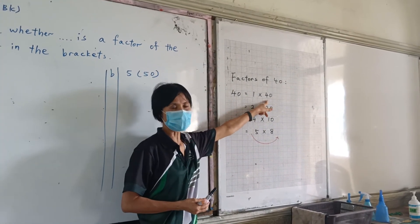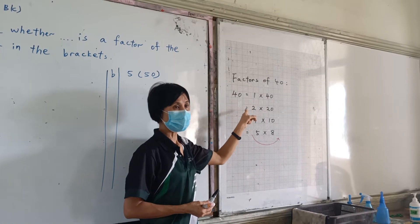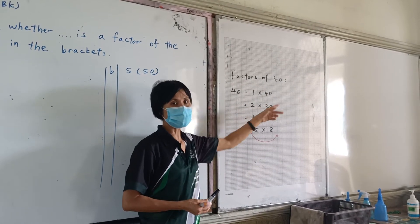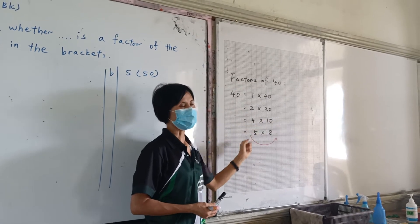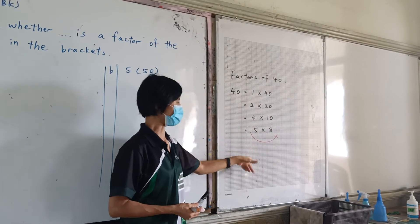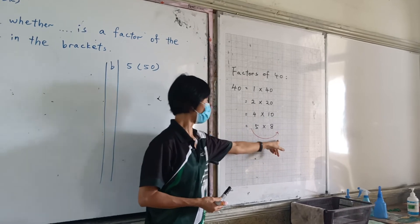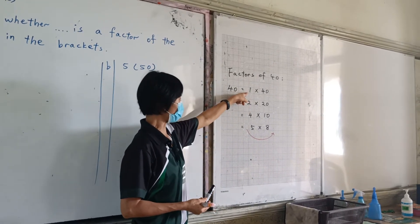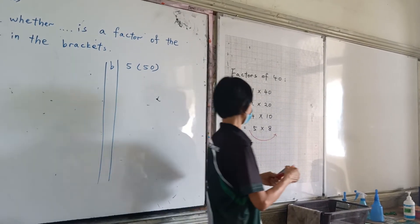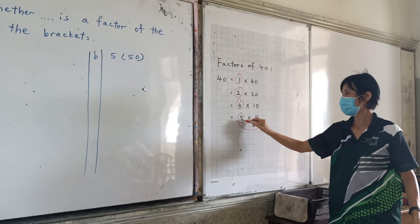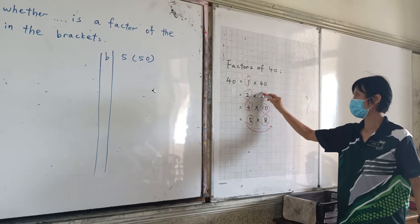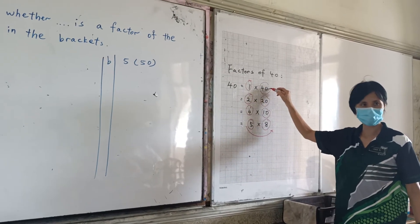We always start from number 1. So, 1 times 40 equals 40. After number 1 is number 2 times 20. How about 3? Nothing right? So, 4 times 10. 5 times 8. After that, 6, 7, you can't get anything. 8, go back. So, factors of 40 are 1, 2, 4, 5, 8, 10, 20, 40. They are factors of 40.